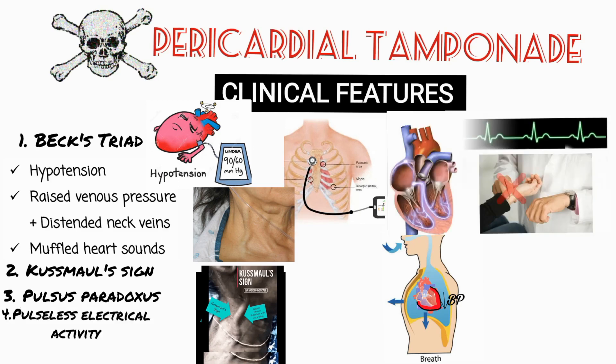Pulseless electrical activity is also seen in pericardial tamponade, which means that the ECG shows a heart rhythm that should produce a pulse but does not. This occurs when the electrical activity of the heart is normal but the heart does not contract at all, or there is insufficient cardiac output to generate a pulse.